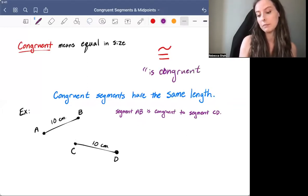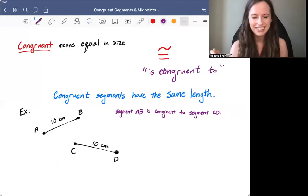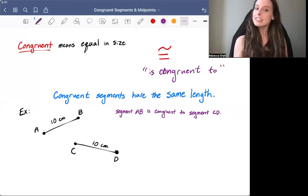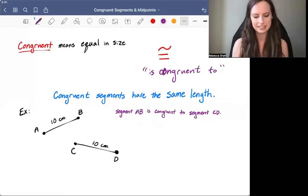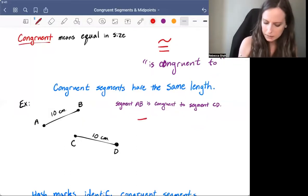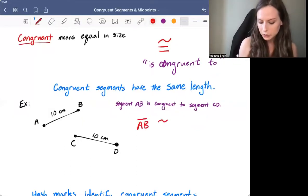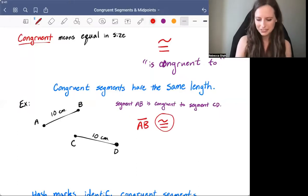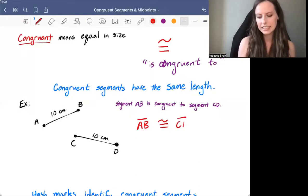This is great news if you're like me and you don't like writing everything out every time because it can really save us time when we're describing what we see in these diagrams. For example, in this diagram, we can write out segment AB is congruent to, there's our congruent symbol, segment CD.